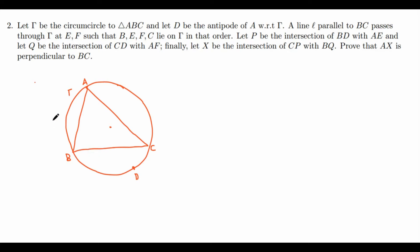And now we have a line L parallel to BC. So let's draw that L and passes through gamma at E and F such that B, E, C, F lie on gamma in that order. So something like this.